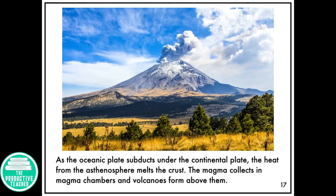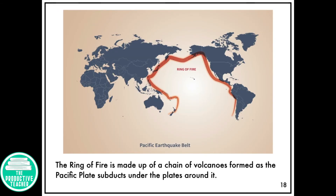As the oceanic plate subducts under the continental plate, the heat from the asthenosphere melts the crust. The magma collects in magma chambers and volcanoes form above them. The Ring of Fire is made up of a chain of volcanoes formed as the Pacific plate subducts under the plates around it.